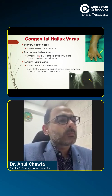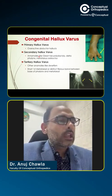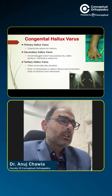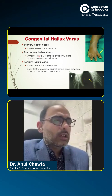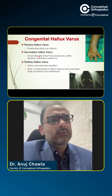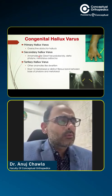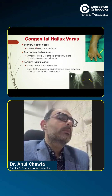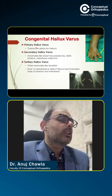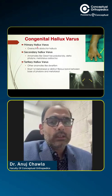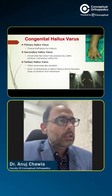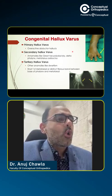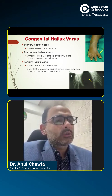Just a bit of a word about congenital hallux varus. It's quite rare — I personally have seen maybe one or two cases, not more than that. It is a primary hallux varus. There are three types primarily. One is a primary hallux varus, which is due to overactive abductor hallucis.